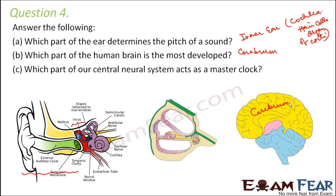Which part of our central nervous system acts as a master clock? The central nervous system is made up of brain and spinal cord. The brain is the master clock, because the spinal cord handles only reflex actions, whereas the brain controls everything that is happening inside our body.